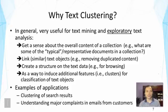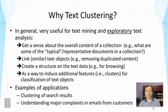There are many applications of text clustering. One is clustering search results — a search engine can cluster results so the user sees the overall structure returned for a query. When a query is ambiguous, this is particularly useful because clusters likely represent different senses of the ambiguous word. Another application is understanding major complaints from customers based on their emails — we can cluster the email messages and find the major clusters to understand what the complaints are about.